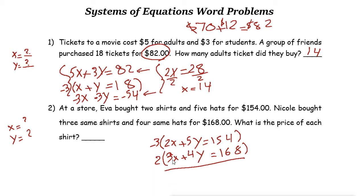The first equation times negative 3 gives us negative 6X minus 15Y equals negative 462. Just multiply negative 3 times 154, the answer is negative 462. The second equation times 2 gives us 6X plus 8Y equals 336, which is 168 times 2.